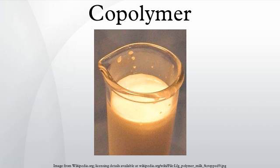Copolymers may also be described in terms of the existence of or arrangement of branches in the polymer structure. Linear copolymers consist of a single main chain, whereas branched copolymers consist of a single main chain with one or more polymeric side chains. Other special types of branched copolymers include star copolymers, brush copolymers, and comb copolymers. In gradient copolymers, the monomer composition changes gradually along the chain.